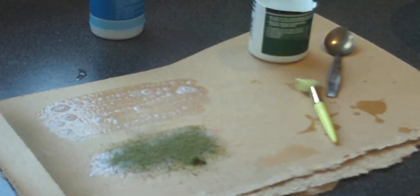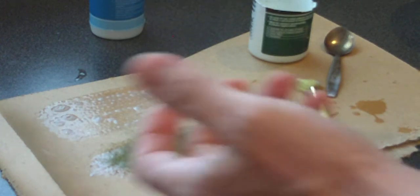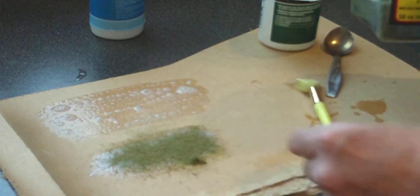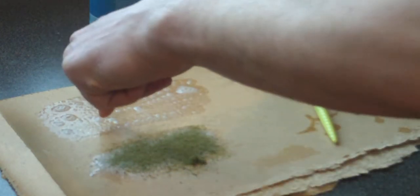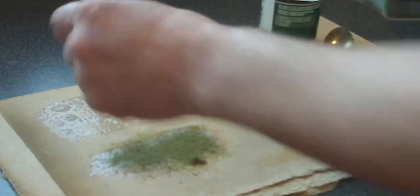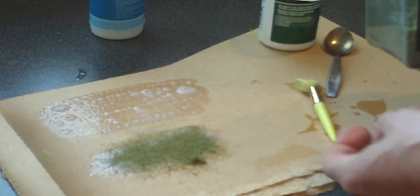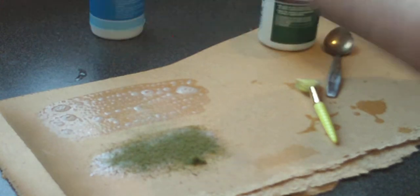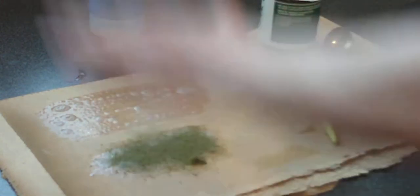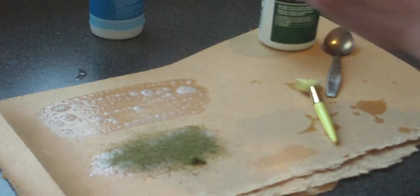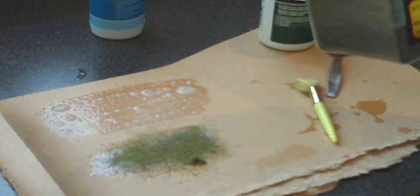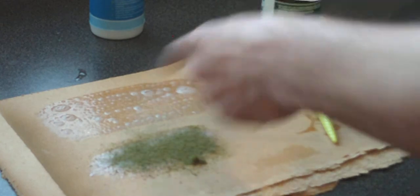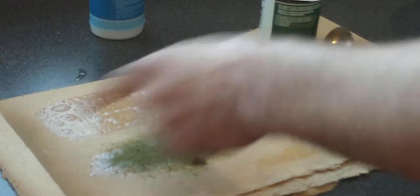If you've got woodland scenic static grass flock, you can get an electric applicator. You stick a nail or screw into the baseboard, connect it to a wire and the static grass applicator. You shake it like a sieve and the electric charge makes the grass stick up. But with N gauge I don't really need that because the grass ends up quite tall.